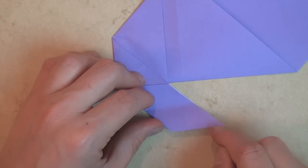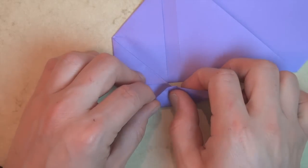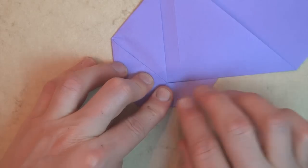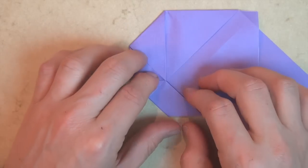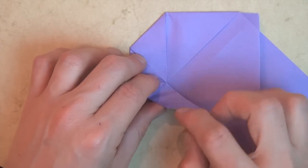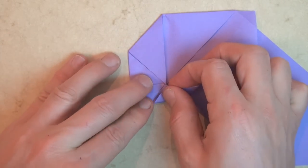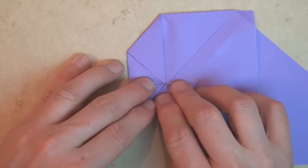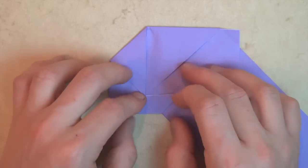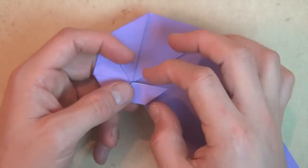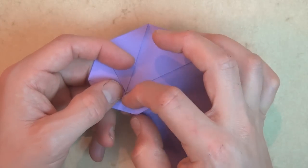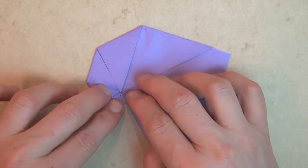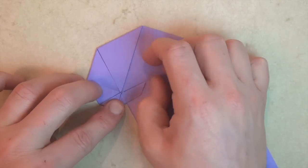And fold this corner to here. So we're always folding the corner that's nearest to the rock corner. And rotate and now fold this corner to here. And let's fold this corner to here.